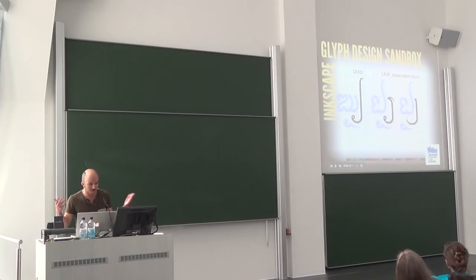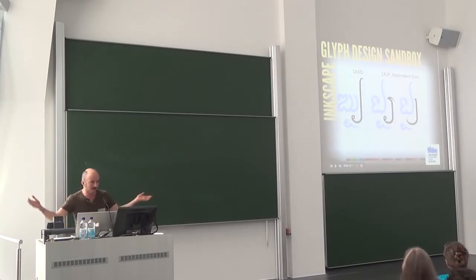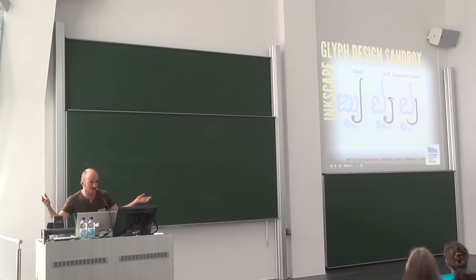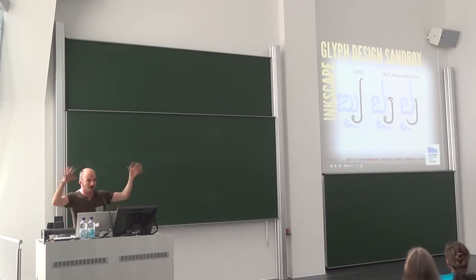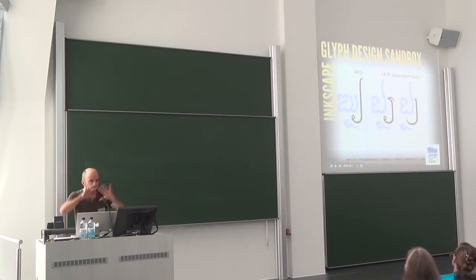Here's another example where in Inkscape I could create similar glyphs at the same time. I've got U+1A6D and two different possible versions of U+1A3F in the subjoined or dependent form, along with in purple some finished glyphs so I can look side by side and see how everything looks. This is like the artist in me just playing around on the digital canvas.